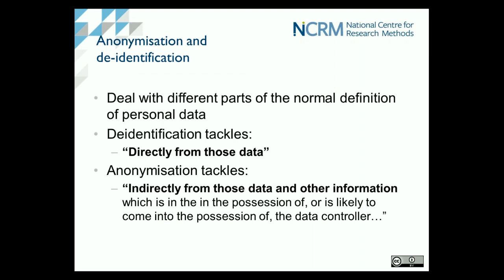I want to distinguish between two terms: de-identification and anonymisation. As an aside, in different jurisdictions the terms are used differently — in Australia, Canada, and the US, 'de-identification' is used to mean what we mean by anonymisation here. De-identification here means the removal or obscuring of direct identifiers, tackling the part of the definition of personal data where you can look at an item of data and identify a person without any external information. Anonymisation, on the other hand, tackles indirect identification — where you bring other information to bear in order to make a re-identification. That is obviously the much more complex problem to solve.